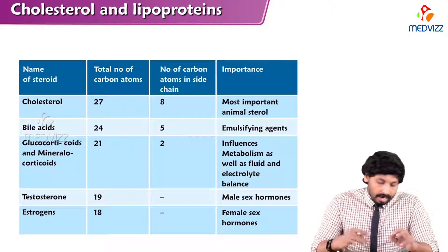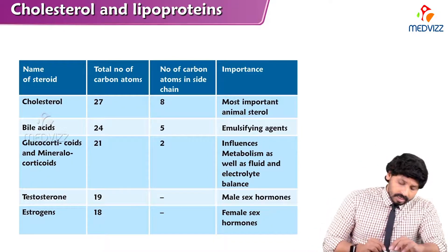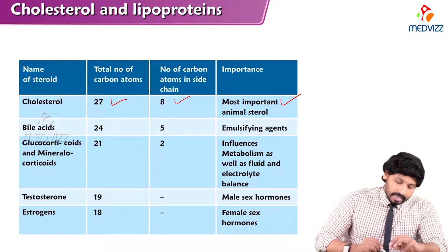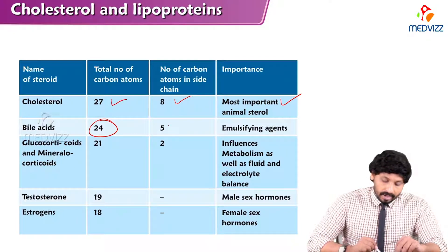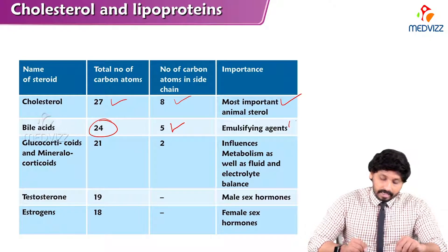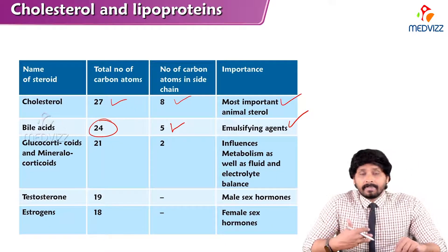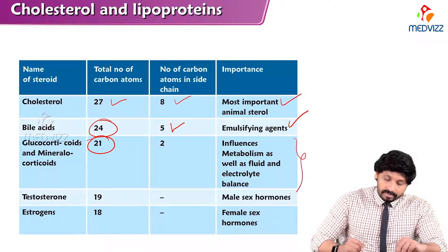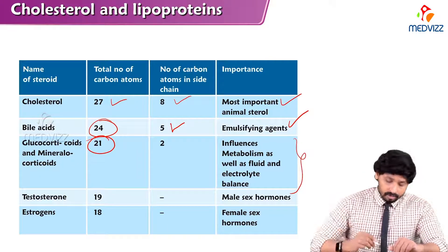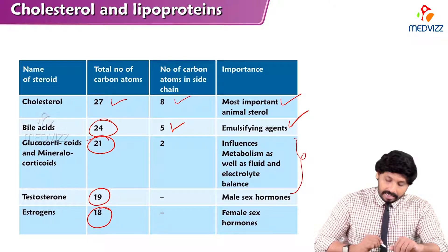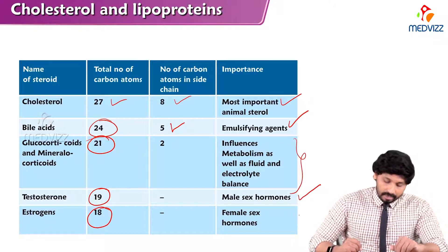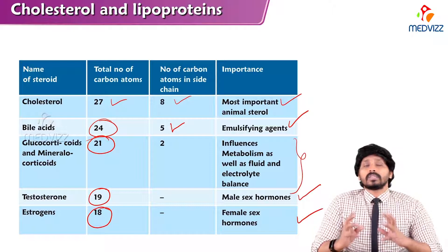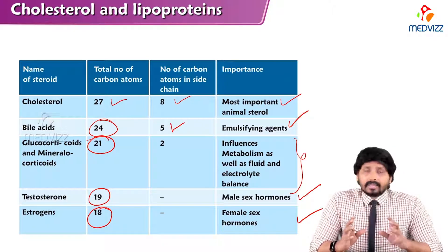These are the things about the structure and the products derived from cholesterol. Cholesterol is a 27-carbon compound with eight carbons in the side chain and is the most important animal sterol. Bile acids have 24 carbons — three carbons less than cholesterol — with five carbons in the side chain, and act as emulsifying agents. Glucocorticoids and mineralocorticoids have 21 carbons and influence metabolism as well as fluid and electrolyte balance. Testosterone and estrogen are sex hormones: testosterone has 19 carbons and is the male sex hormone, while estrogen has 18 carbons and is the female sex hormone. Now we should know how cholesterol is synthesized and how it is utilized.